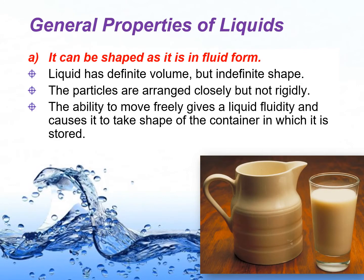Firstly, let's discuss the general properties of liquid. Number one: it can be shaped as it is in fluid form. Liquid has definite volume but indefinite shape. The particles of liquid are arranged closely but not as rigid as in gas. Liquid takes up the shape of the container in which it is stored.